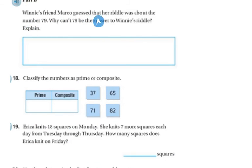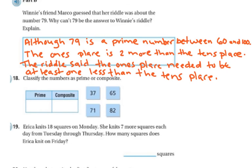Winnie's friend Marco guessed that her riddle was about the number 79. Why can't 79 be the answer? Although 79 is a prime number between 60 and 100, the 1s place is 2 more than the 10s place because 9 is 2 more than 7. The riddle says the 1s place needed to be 2 less than the 10s place.